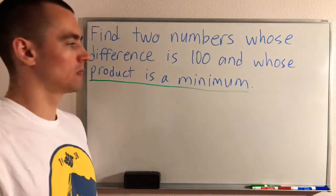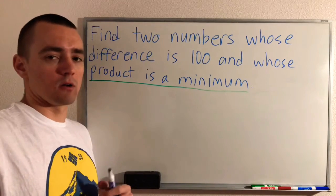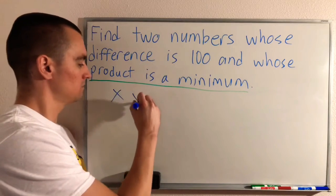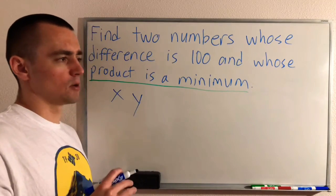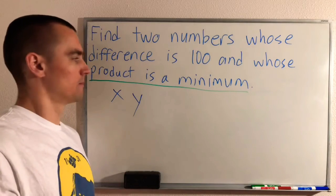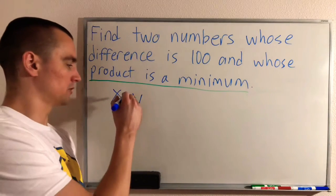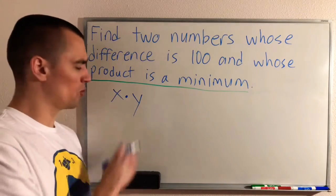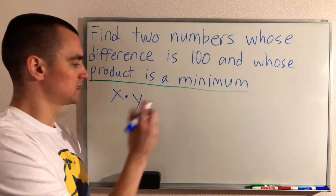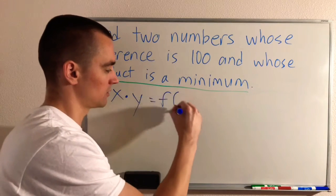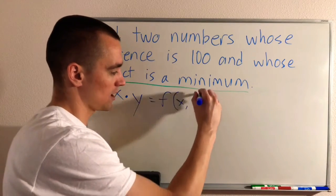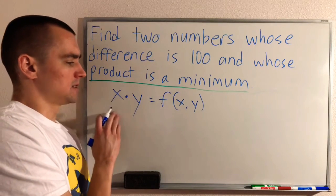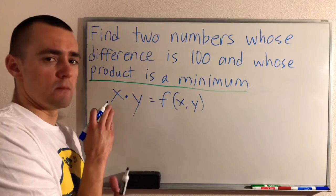So think about it this way: we have two numbers called x and y, and we want to make their product a minimum. The product of two numbers is what you get when you multiply them together, so x times y — we want to make this as small as possible. This is an important function; let's call it f(x, y), where x and y are the two variables.